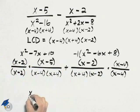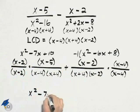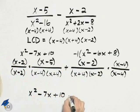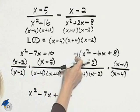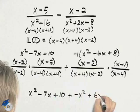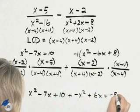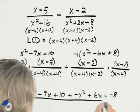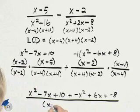And so my next step will be x squared minus 7x plus 10 plus negative 1 times x squared, which is negative x squared, plus 6x plus negative 8. I can put that all over the denominator.